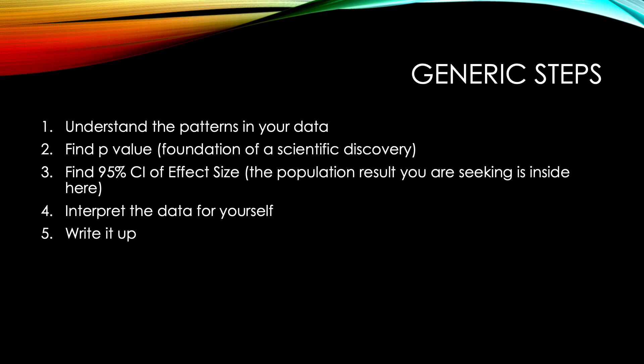The generic steps I will teach you throughout this course are: when you get a data set, graph it and look at the patterns in your data. The second step will be to find your p-value, see if you found a significant p-value and made a scientific discovery. Step number three will be new to you — find a 95% confidence interval of effect size that will allow you to identify the population effect size you were searching for. Then interpret the whole thing and finally write it up.